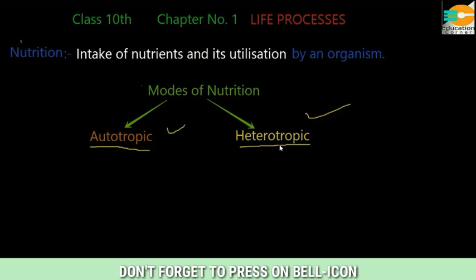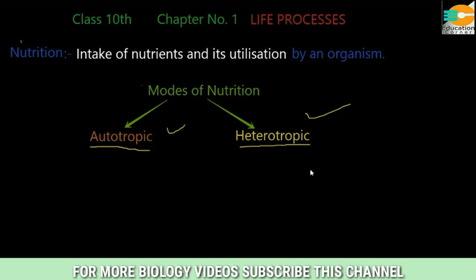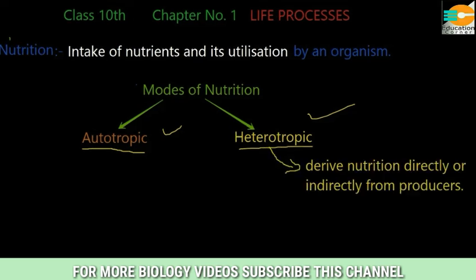Another group is the fungi kingdom, which you have already studied in class nine. Next is heterotrophic nutrition. Hetero means different and trophic means nutrition. Heterotrophic organisms are those which derive their nutrition directly or indirectly from the producers.